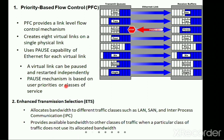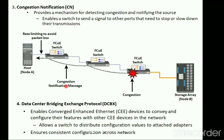The second technology is Enhanced Transmission Selection (ETS). In ETS, bandwidth is allocated based on the traffic class — whether it is LAN, SAN, or inter-process communication. The third technology is Congestion Notification.